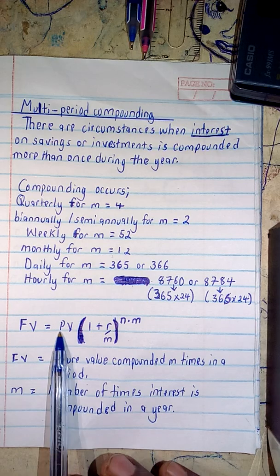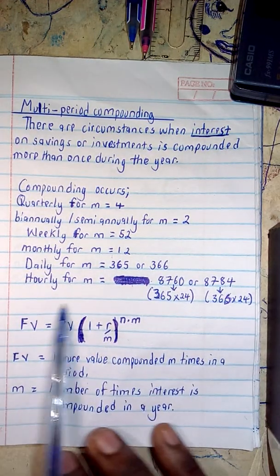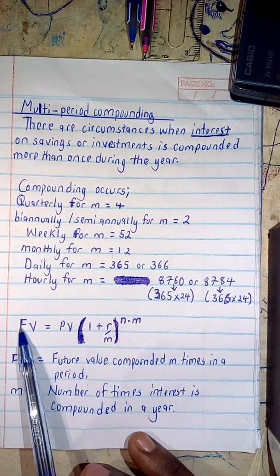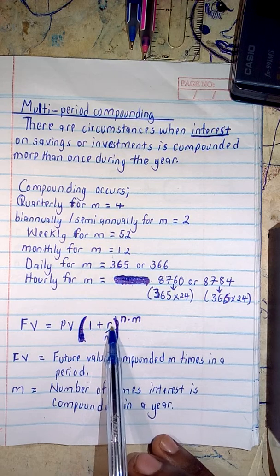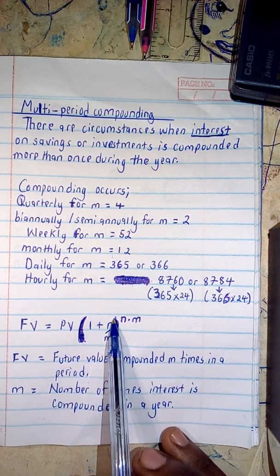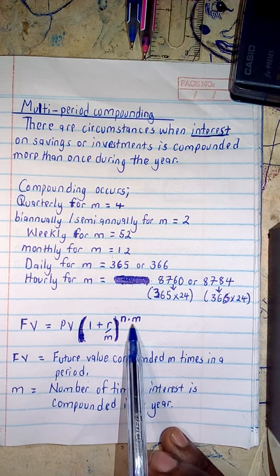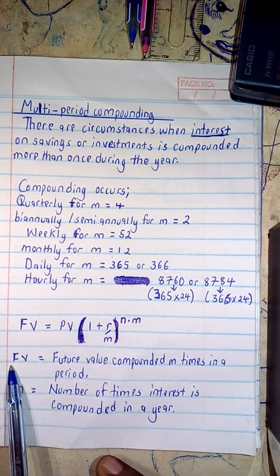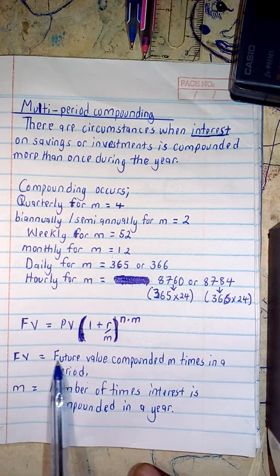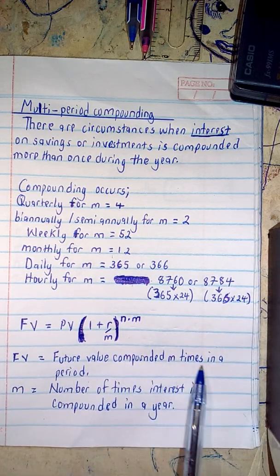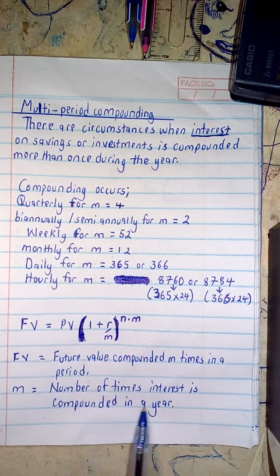To find the future value when subjected to multi-period compounding, the formula is: FV = PV × (1 + R/M)^(n × M), where FV is the future value compounded M times in a period, and M is the number of times interest is compounded in a year.